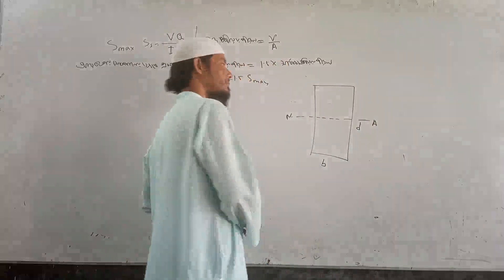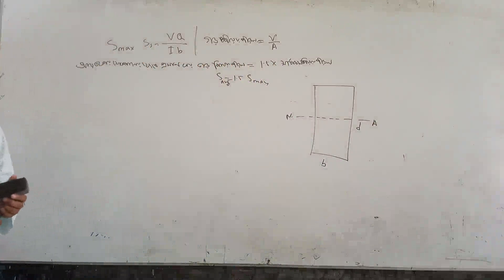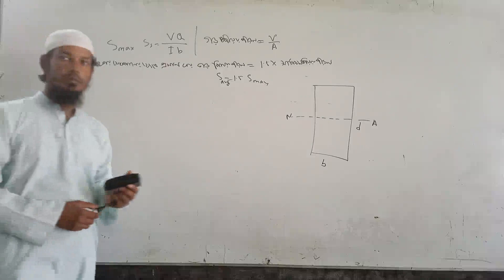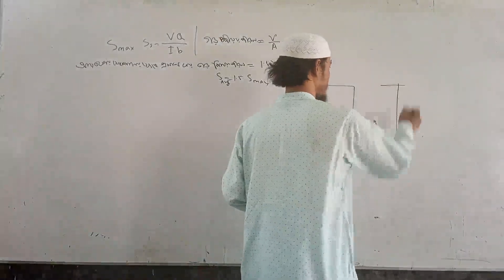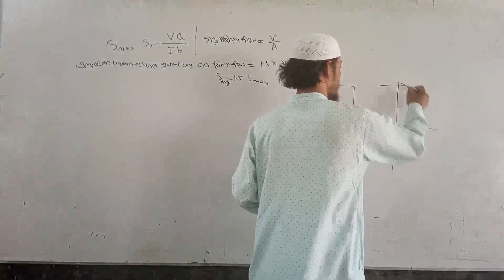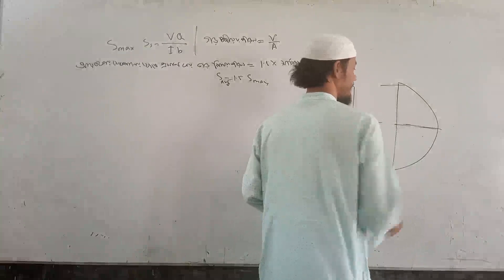Let's see how the bending moment is zero. So we are going to neutral. So neutral axis is maximum. Neutral axis.